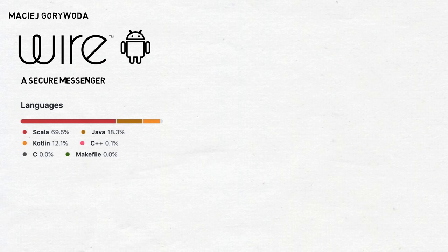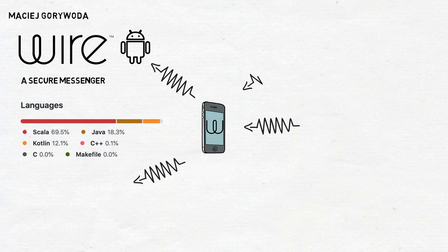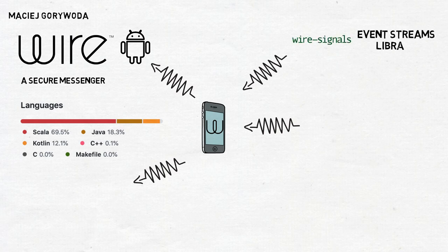Most Android apps are usually implemented in Java and/or Kotlin. Wire is a messenger, and as such it must be very responsive. It has to quickly react to any events coming from the backend, as well as from the user and from Android itself. So during the last four years, the Android team developed its own implementation of event streams and so-called signals, a build-up on top of event streams.